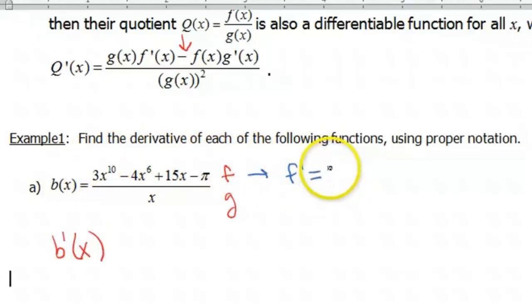So derivative of 3x^10 is 30x^9, because if you do 10 times 3, that gives us 30, and reduce your power by 1, that gives you a 9. Minus the derivative of 4x^6, multiply the 4 by the 6, we get 24. Reduce our power by 1, that's gonna give us x^5. And then plus the derivative of 15x is 15. Pi's a constant, 3.14, so when you do the derivative of that, that ends up giving you 0. Okay, then g', the derivative of x is just 1, so g' is just 1.